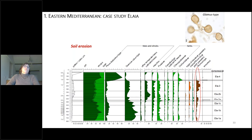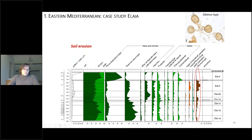Another important indicator is spores of Glomus type, or Glomeromycota — mycorrhizal fungi growing on plant roots. When found in lacustrine or marine environments, they indicate soil erosion. We see some soil erosion from the beginning, then increasing during deforestation. During Elaia's functioning as a harbor, soil erosion was very low — possibly because people protected the shore — and then increased again after the harbor ceased functioning, correlating well with increasing pastoral activities.